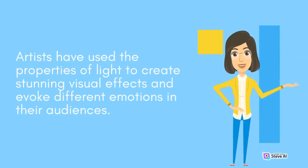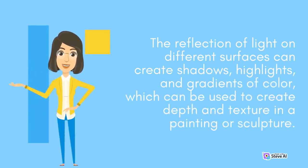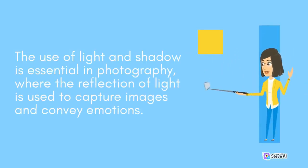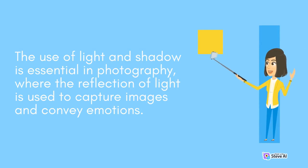Artists have used the properties of light to create stunning visual effects and evoke different emotions in their audiences. The reflection of light on different surfaces can create shadows, highlights, and gradients of color, which can be used to create depth and texture in a painting or sculpture. The use of light and shadow is essential in photography, where the reflection of light is used to capture images and convey emotions.